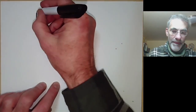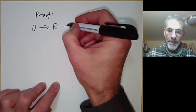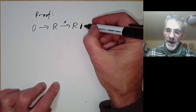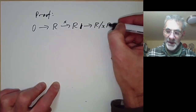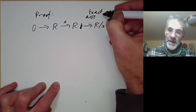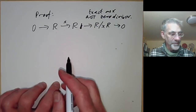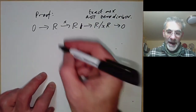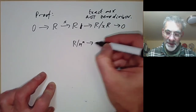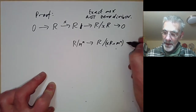For the proof, we write down the following exact sequence: 0 → r → r → r/xr → 0, where the first map is multiplication by x. This is exact precisely because x is not a zero divisor — that is where we use the condition. We then quotient out by some power of m, obtaining a sequence involving r/m^n mapping to r/(xr + m^n), and this is exact.